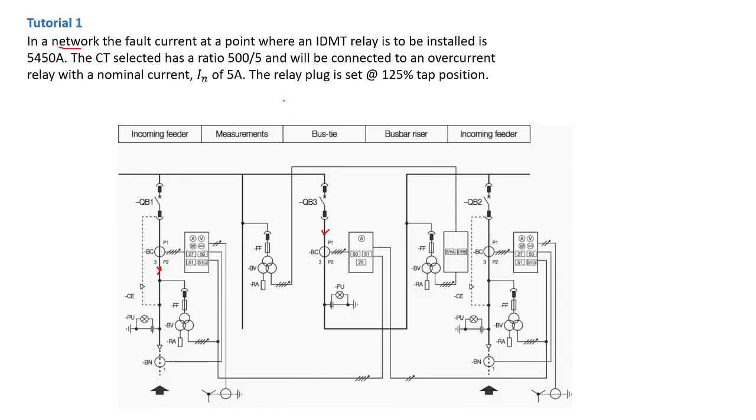The CT selected has a ratio of 500/5 and will be connected to an overcurrent relay with a nominal current, IN, of 5 amp. The relay plug is set at 125% tap position.